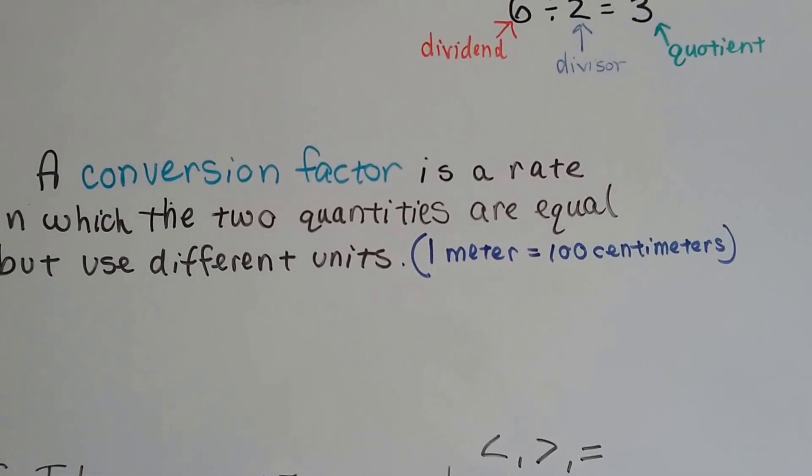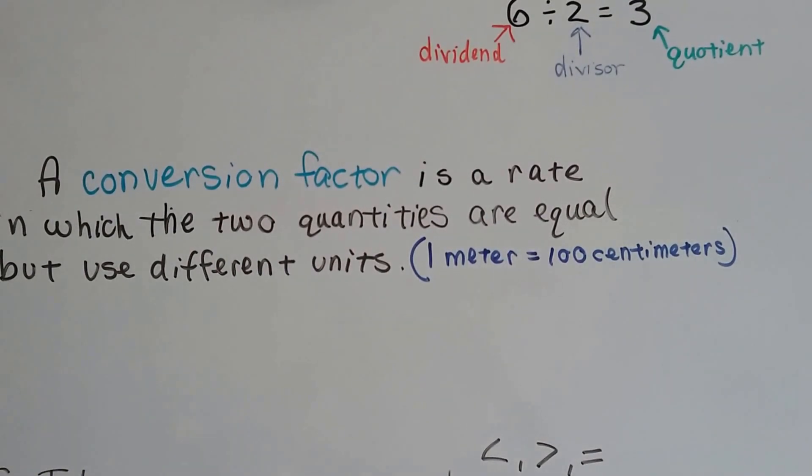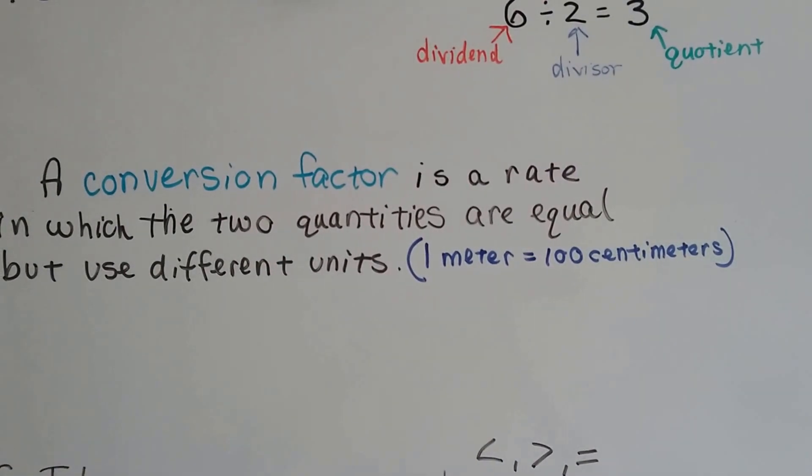Take the metric system. One meter is equal to 100 centimeters. So we would convert between meters, centimeters, decimeters, kilometers, like that.